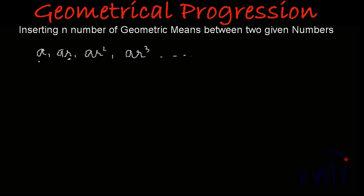So suppose if we have any two numbers like a and b and here we want to insert n geometric means, or let me call them GM.